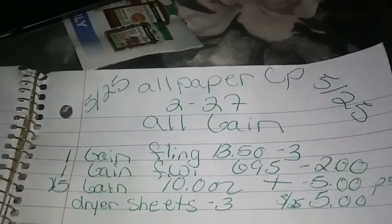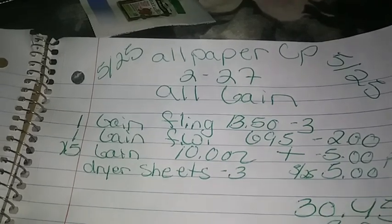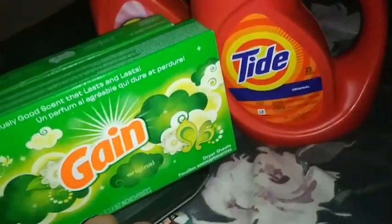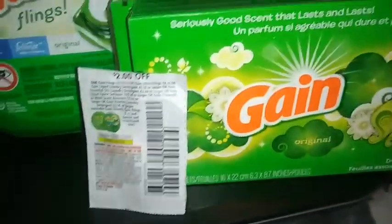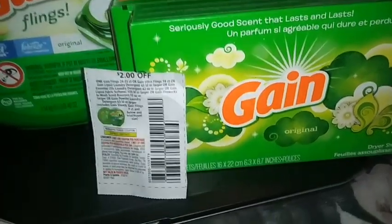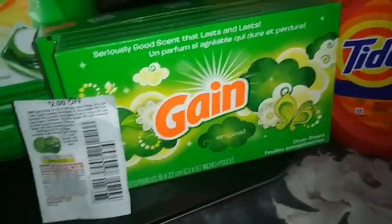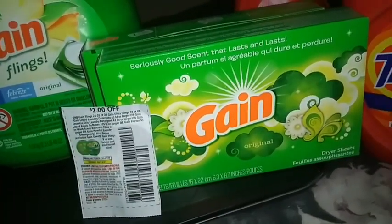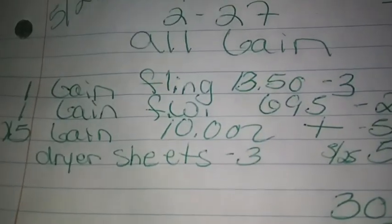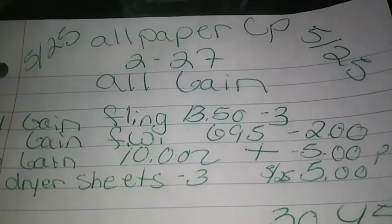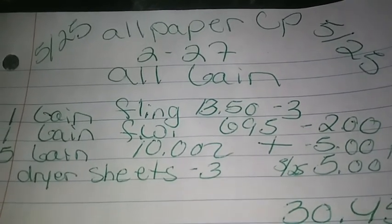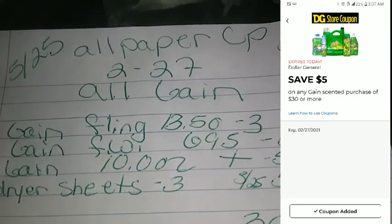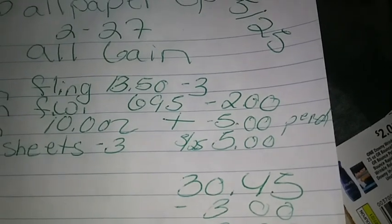Five Gain dryer sheets — we're going to get five of these and use five paper coupons. You know those five dryer sheets are going to be completely free. But you have to come up to $30.00 worth of Gain in order to get the $5 off $30.00. Watch how this goes: it comes up to $30.45.